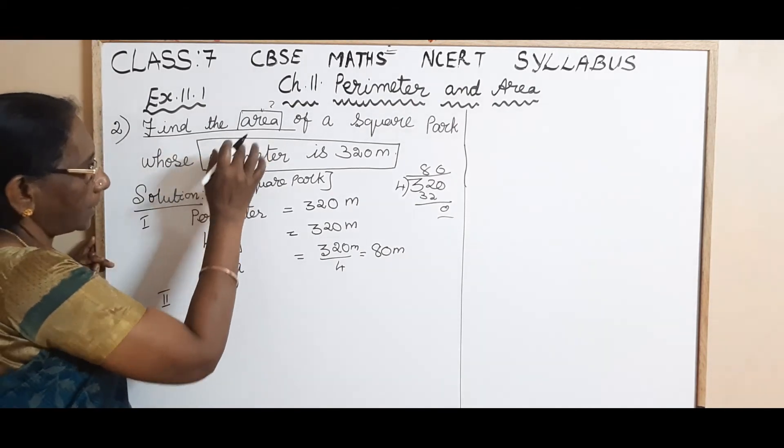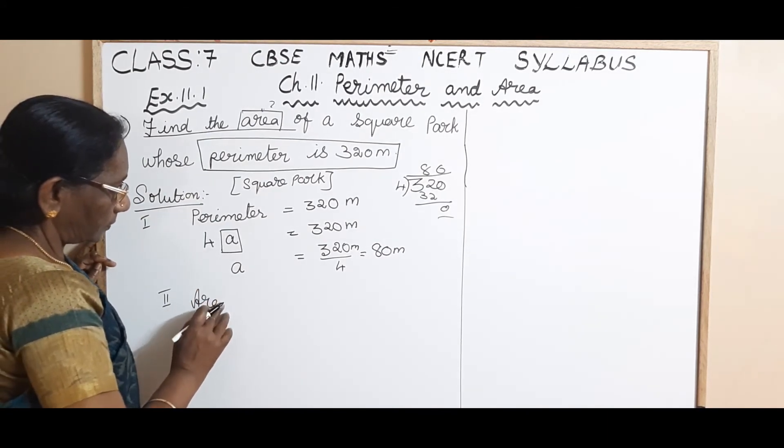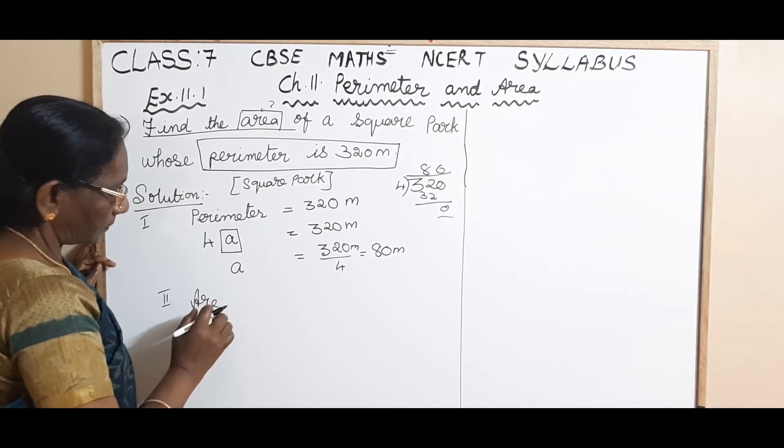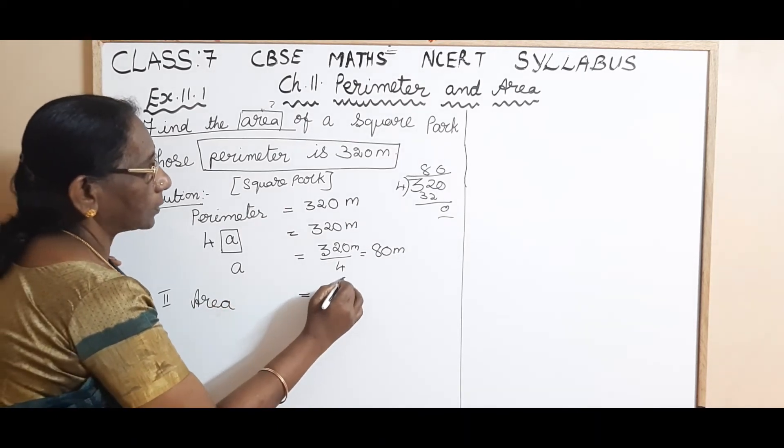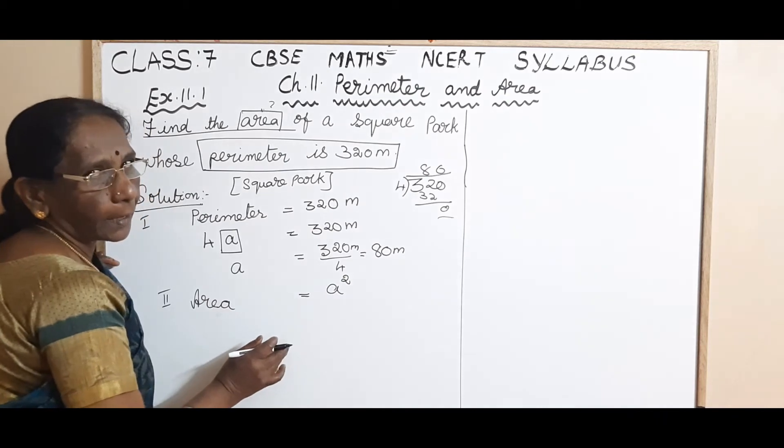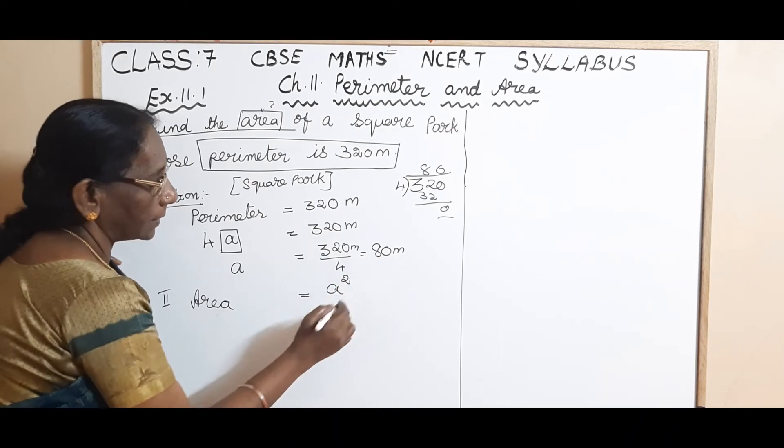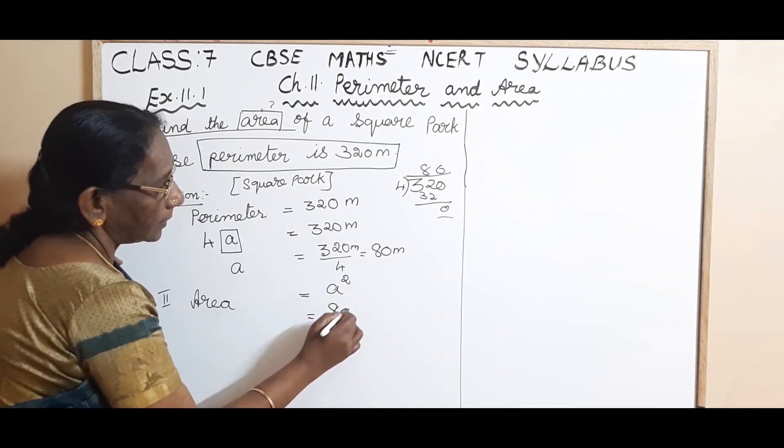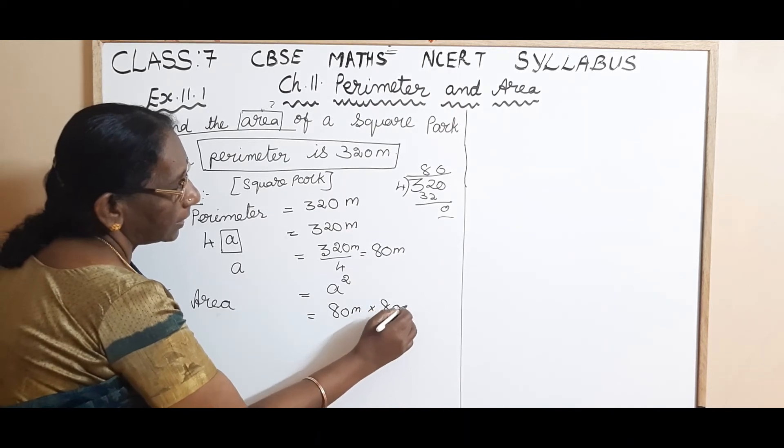What are we supposed to find? Area. What is the formula for the area of a square? A square. So A square is what? Side into side. That is 80 meter into 80 meter.